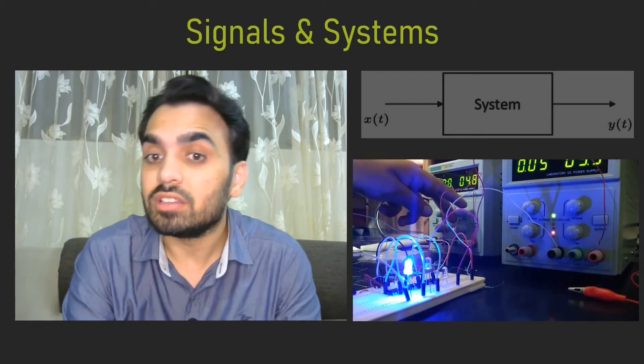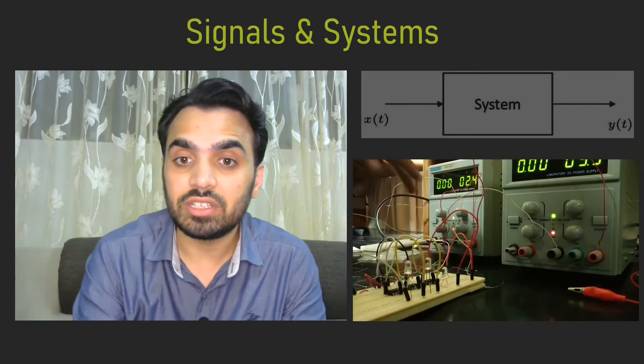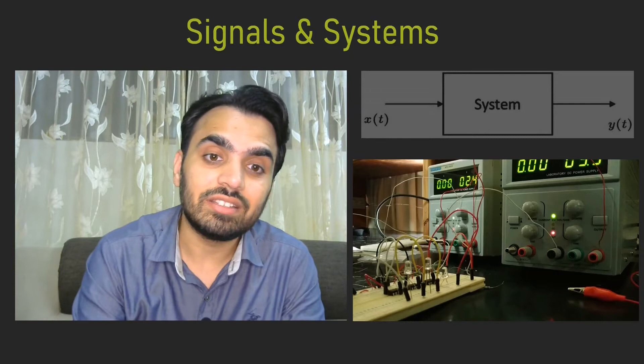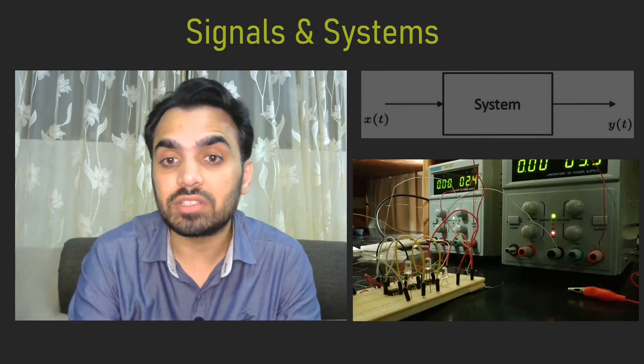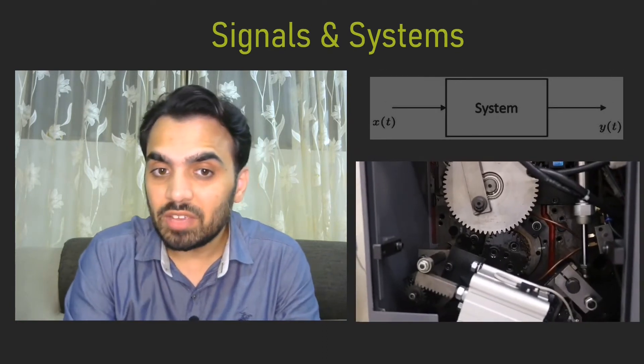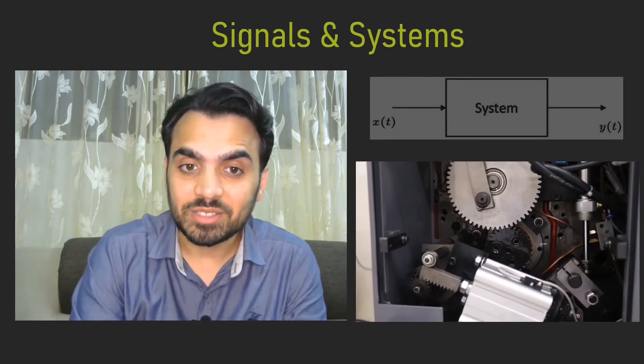we have shown the function generator which is the input and at the output we have LEDs. These LEDs can blink based on the input, say voltage or current. Same kind of behavior can be observed in mechanical systems.